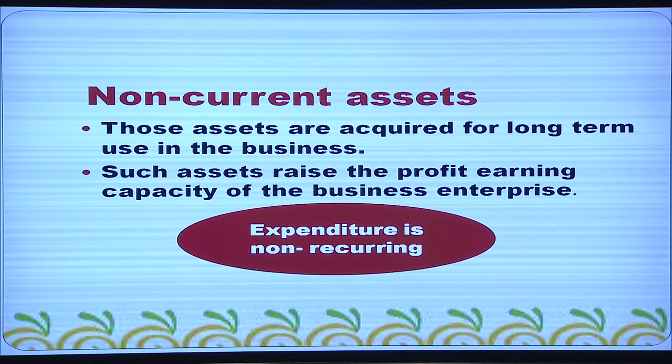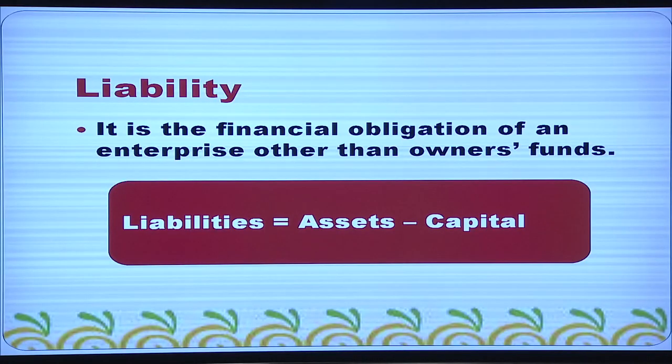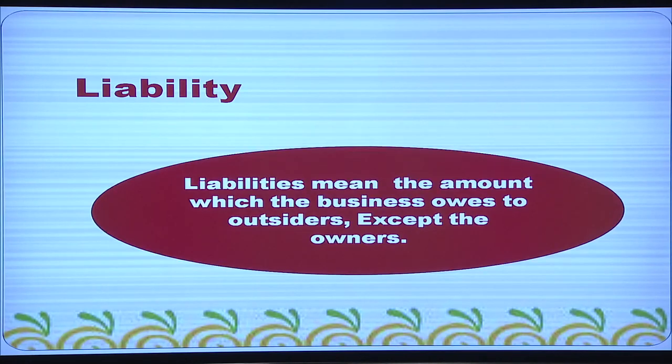Non-current assets raise the profit-earning capacity of the business enterprise. Expenditure on non-current assets is non-recurring. Land, building, plant, and machinery are non-current assets, and the expenditure on them is of a capital nature. Liability is the financial obligation of an enterprise other than owners' funds. Liability equals assets minus capital. Liabilities mean the amount which the business owes to outsiders except the owners.